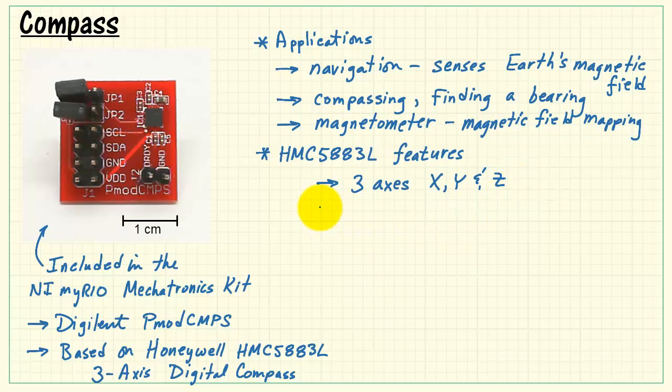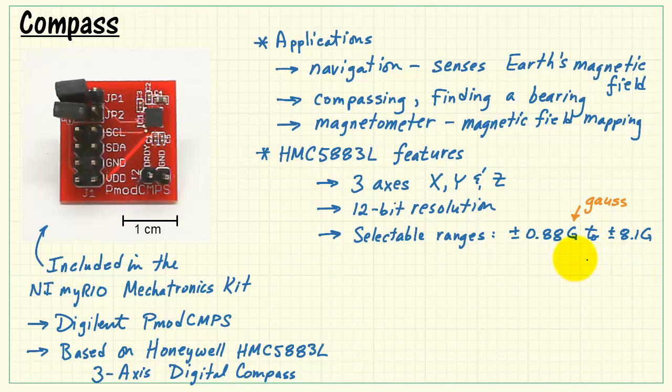Reviewing the features of the Honeywell part, we have a three-axis device X, Y, and Z, 12-bit resolution, selectable ranges going all the way from plus minus 0.88 Gauss up to 8 Gauss. Note that the Earth's field is about 0.3 to 0.7 Gauss, so this is very sensitive device.